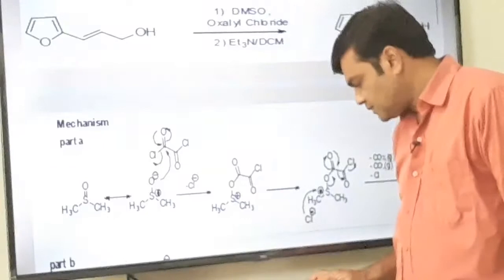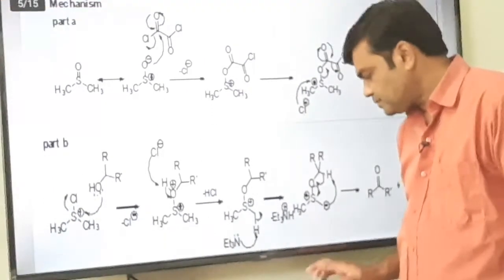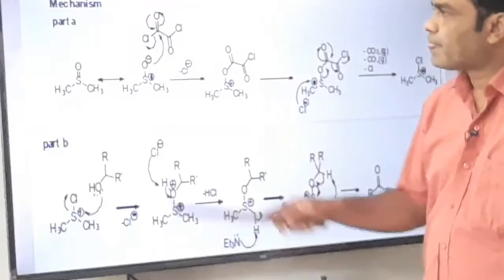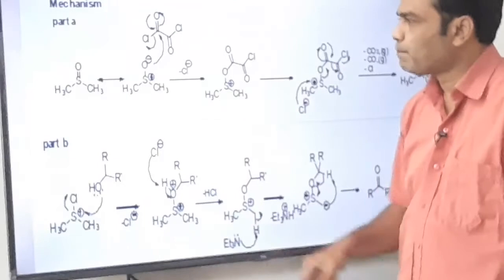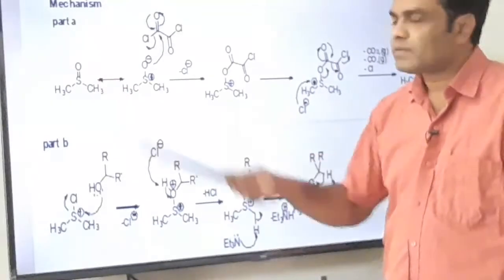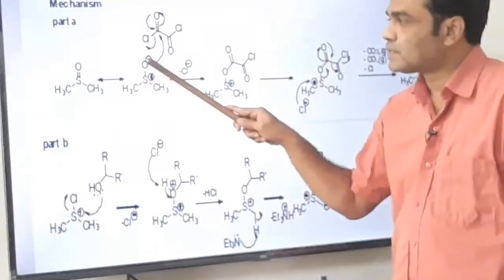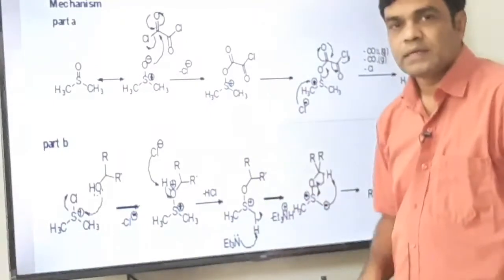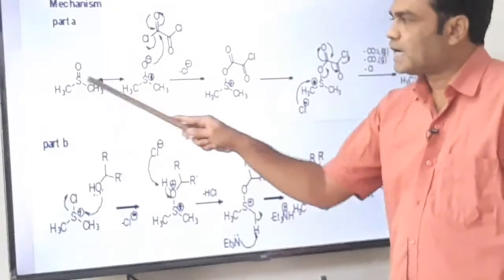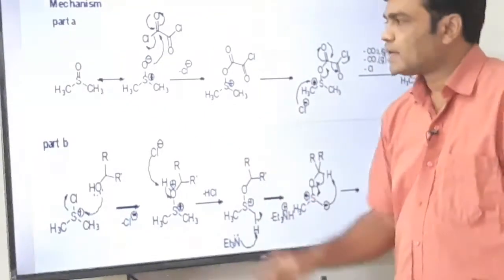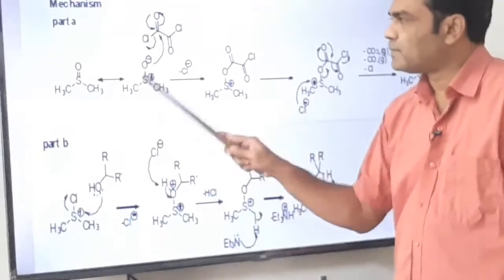It is interesting to see the mechanism of Swern oxidation. In step one, this is dimethyl sulfoxide. As oxygen is more electronegative than sulfur, the pi-bonded electrons are shifted onto the oxygen. So oxygen has excess electron density — negative charge is written on oxygen — and sulfur is deficient. These are the resonating structures of dimethyl sulfoxide.